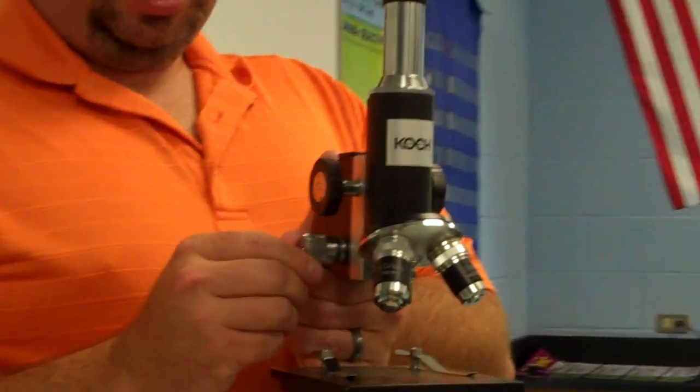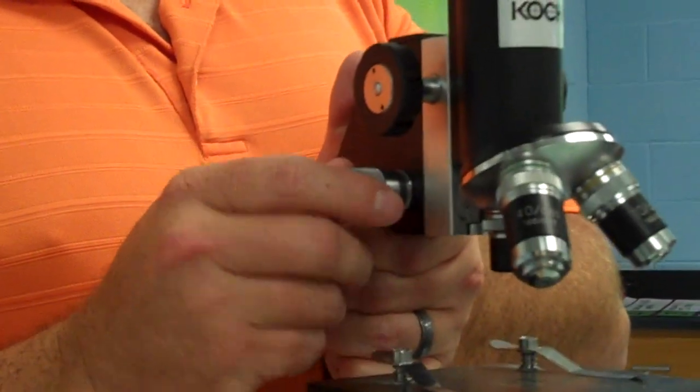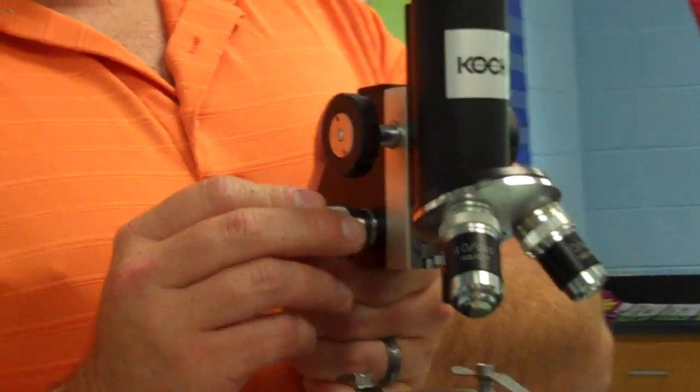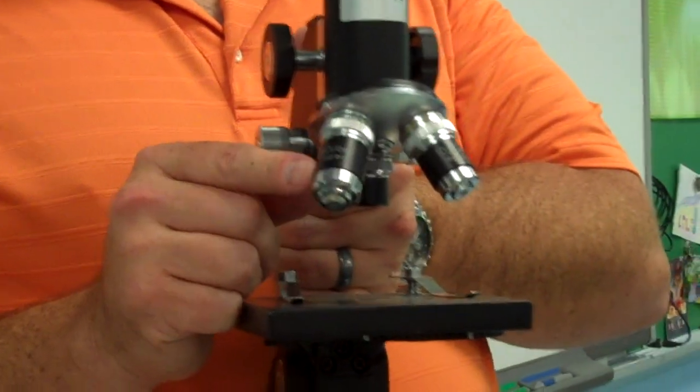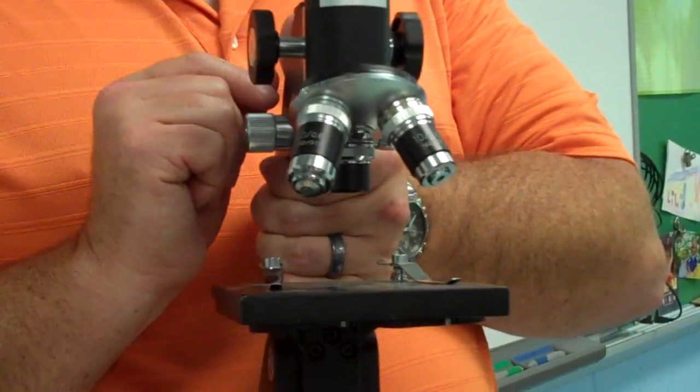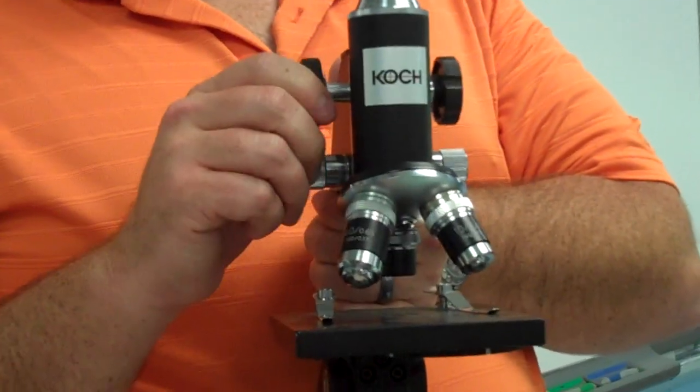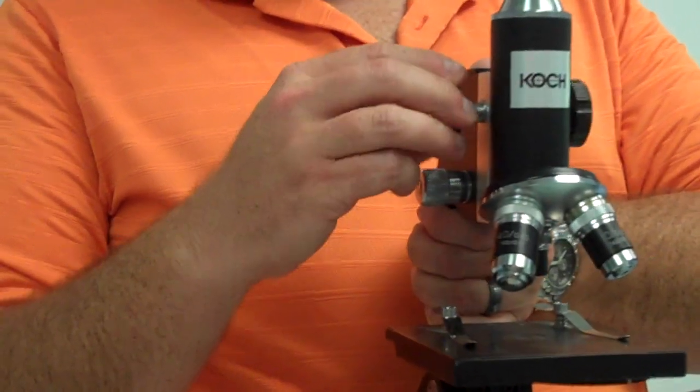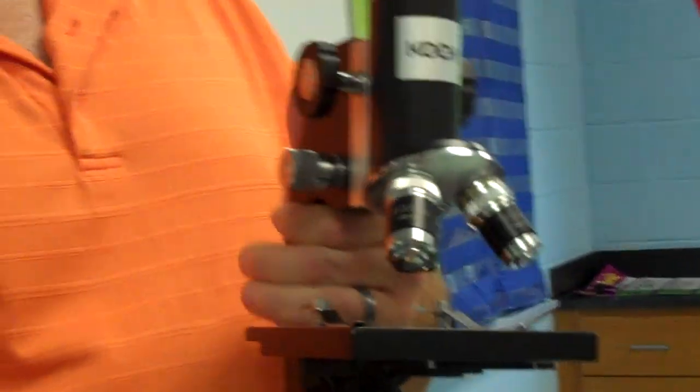The smaller knob is called the fine adjustment knob. This is a knob you will not really use too much. It's used more for higher magnification. And we don't want you using the 40x magnification lens unless directed to because there's a good chance you may crack the slide by having it go down too low. So the coarse adjustment knob allows you to focus the body tube in position. And the fine adjustment knob just kind of focuses that.